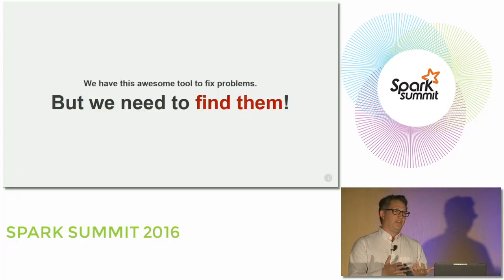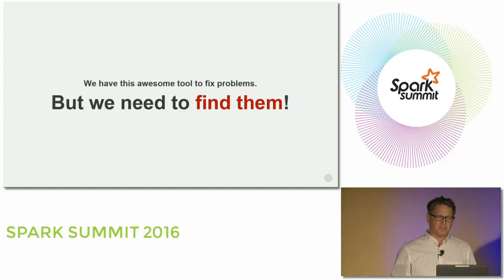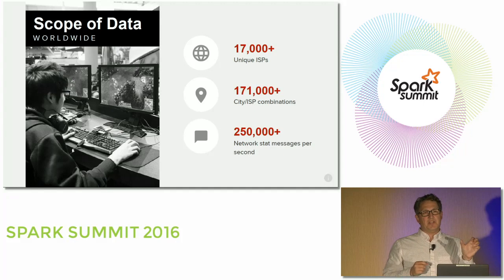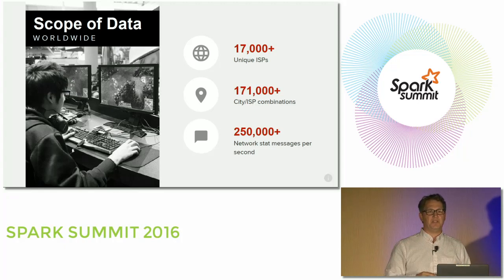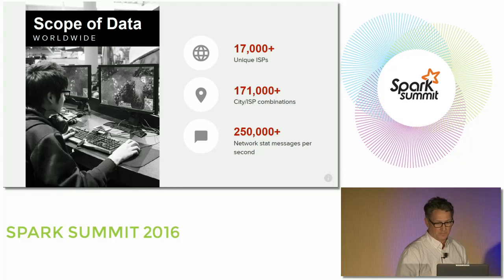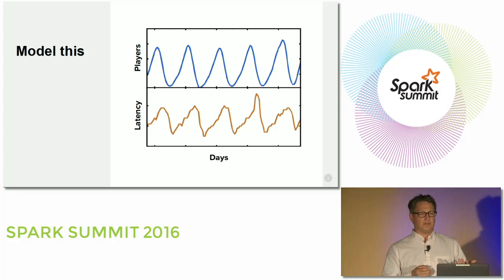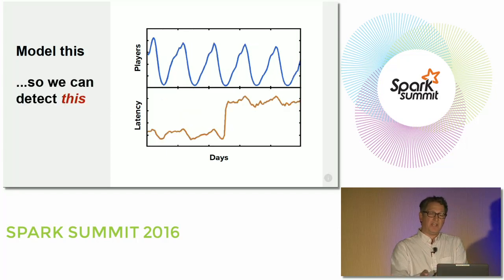The problem is there's a lot of networks in the world and a lot of players. How do we find where we should focus our attention? That's where Spark comes in. The number to keep in mind is roughly 200,000 different unique city-ISP combinations. It's impossible to build dashboards to monitor them all. What we really want is a tool that helps us focus our attention so we know where to go and fix problems. We want to model network metrics such as player count, CCU, average latency, or packet loss as a function of time, then apply machine learning techniques to detect when things go wrong.